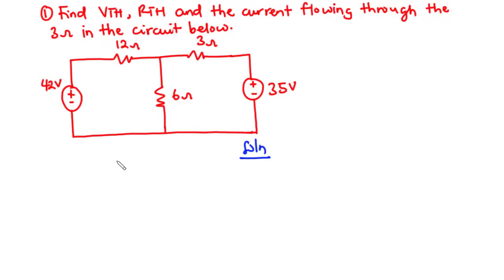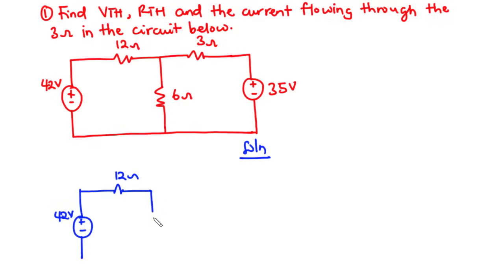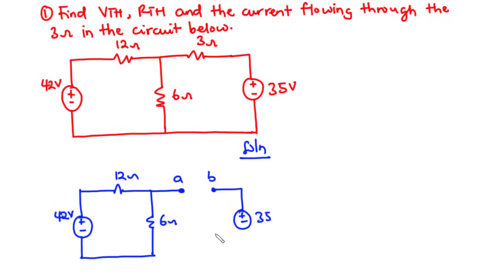To solve this circuit using Thevenin's theorem, the first thing we need to do is remove the 3-ohm resistor — the one we want to find the current flowing through — and mark the terminals, then find VTH. So we have the 42-volt source, the 12-ohm resistor, the 6-ohm resistor, and we remove the 3-ohm resistor. We mark the terminals A and B, include the 35-volt source, and complete the circuit. We call this VTH — the open circuit voltage seen between the two terminals.